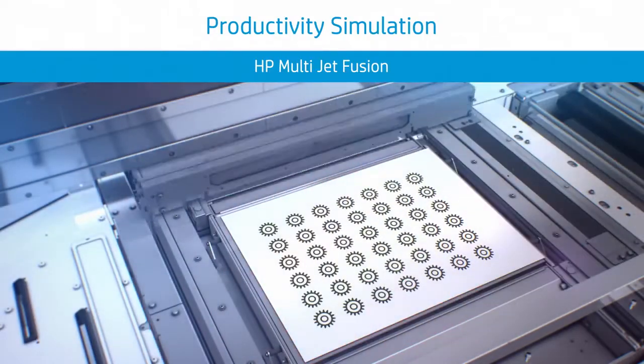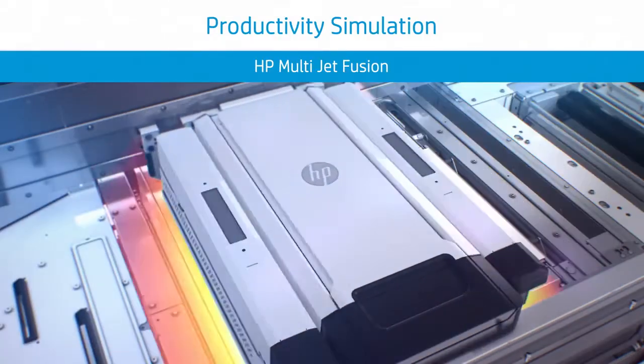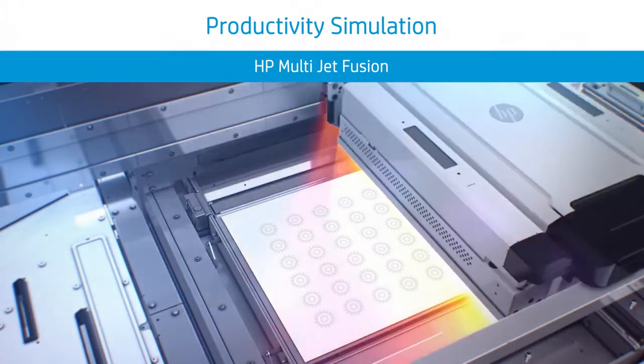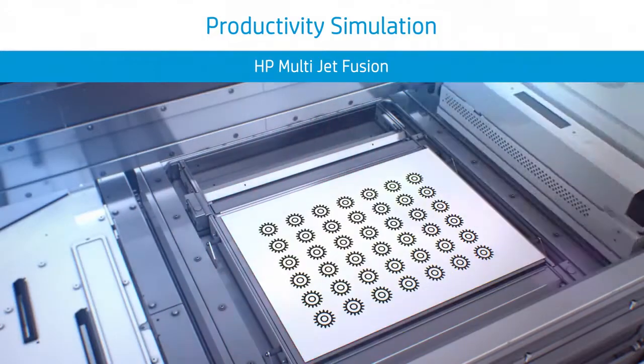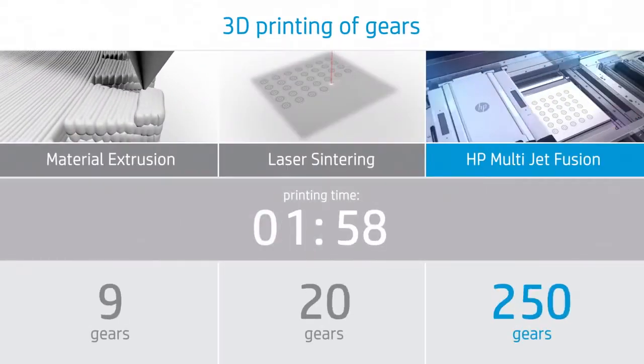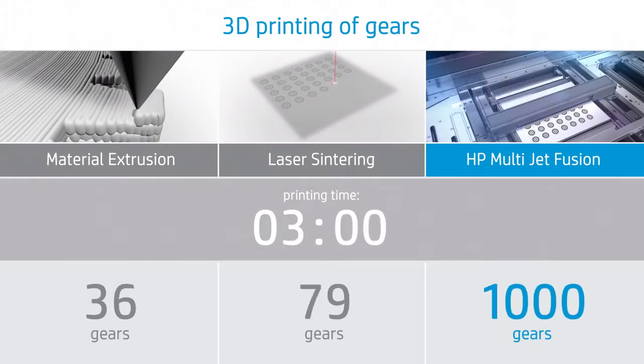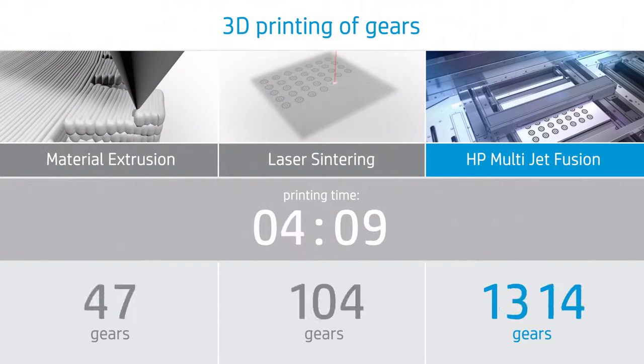This is how HP's proprietary area-wide processing compares with existing popular point processing technologies for building functional parts. In the time it takes these slower point processes to build 1,000 parts, HP's Multi-Jet Fusion technology would have created several thousands of parts.